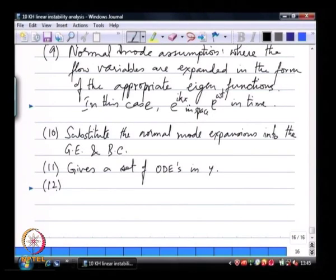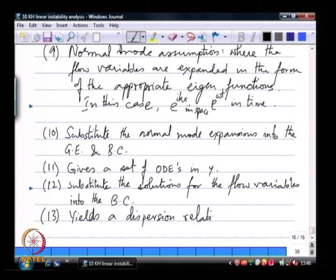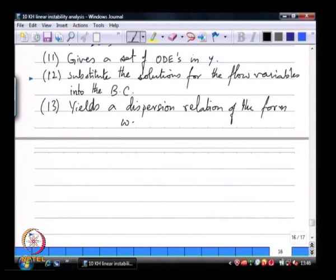If I have a set of ordinary differential equations in y, I now know the complete solution. Substitute the solutions for the flow variables into the boundary conditions, and what that does is it yields a dispersion relation, omega equal to some function of k.